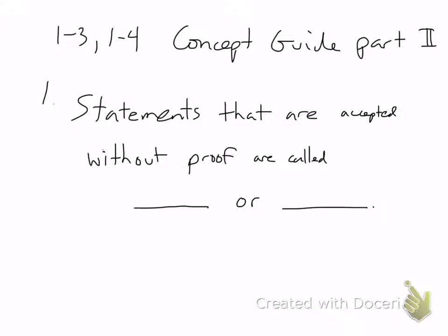A quick definition: statements that are accepted without proof are called axioms or postulates. The reason this is here is we're about to talk about some postulates, and you're probably like, what in the world is a postulate? Well, it's something that you're just going to have to accept that this is true, and I'm not going to prove that it's true. That's what a postulate is.